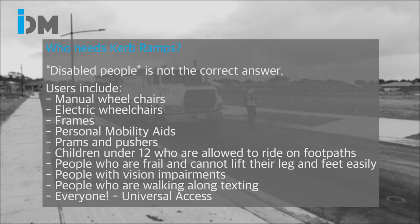There are also children under 12 who are allowed to ride on footpaths, people who are frail and cannot lift their leg or foot easily without loss of balance, people with vision impairments, people who are walking along texting and not looking where they're going. Everyone - universal access is for everyone.